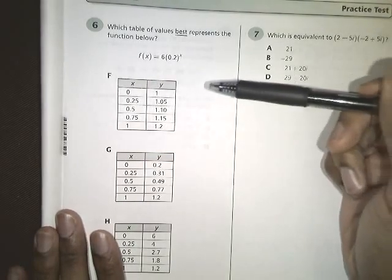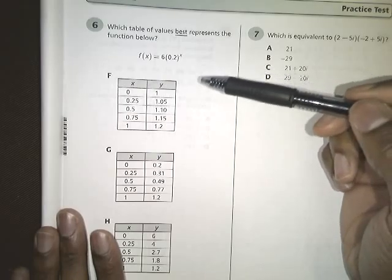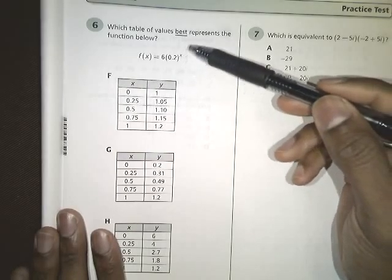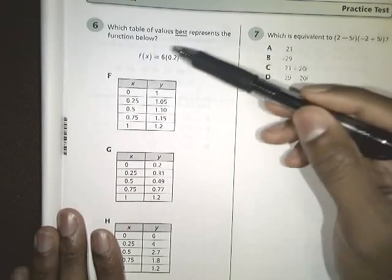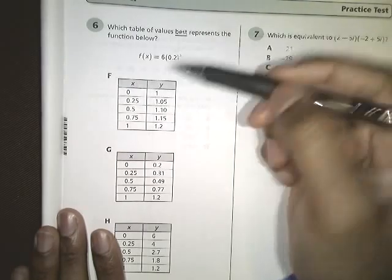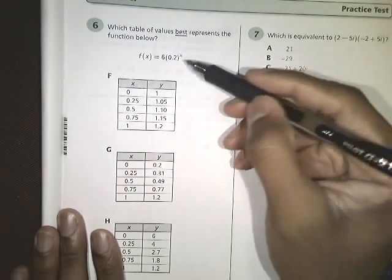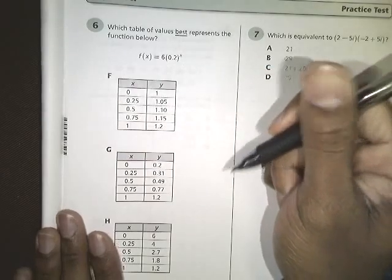All right, this is the Algebra 2 Practice EOC, question number 6, and it reads, which table of values best represents the function below? And it gives you the equation f of x equals 6 times 0.2 raised to the x power.